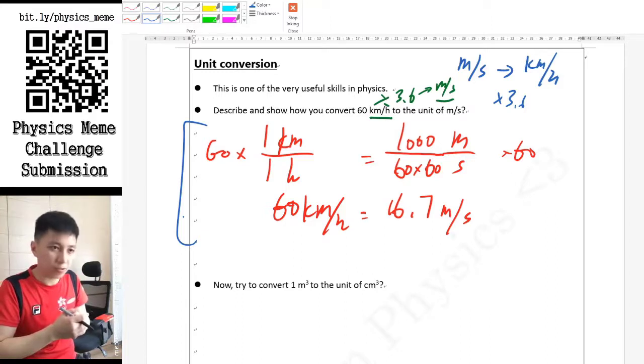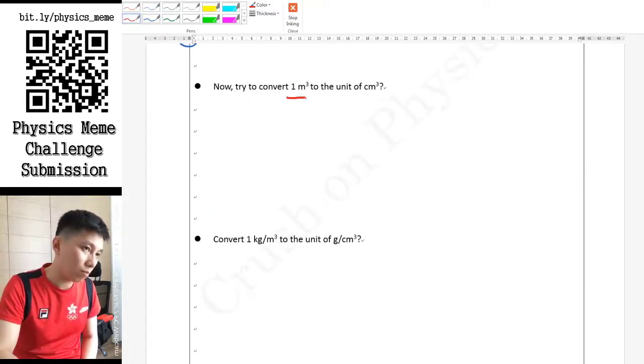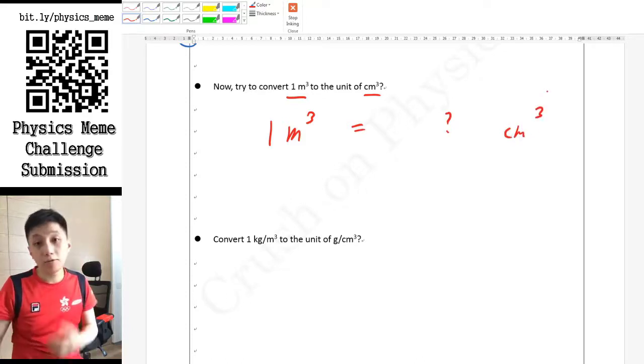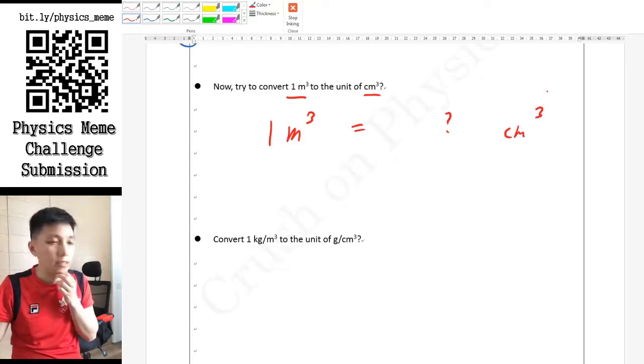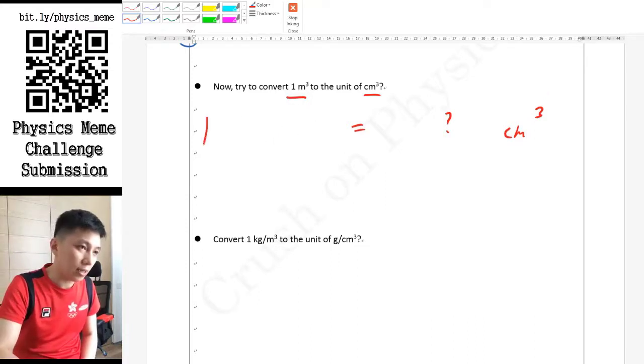Let me show you one more example. Let's say we want to convert from one meter cube to cm cube. How do we actually do it? The easiest way is to understand the idea of cube is to multiply itself three times. So what you can do is imagine this as one meter times one meter times one meter.